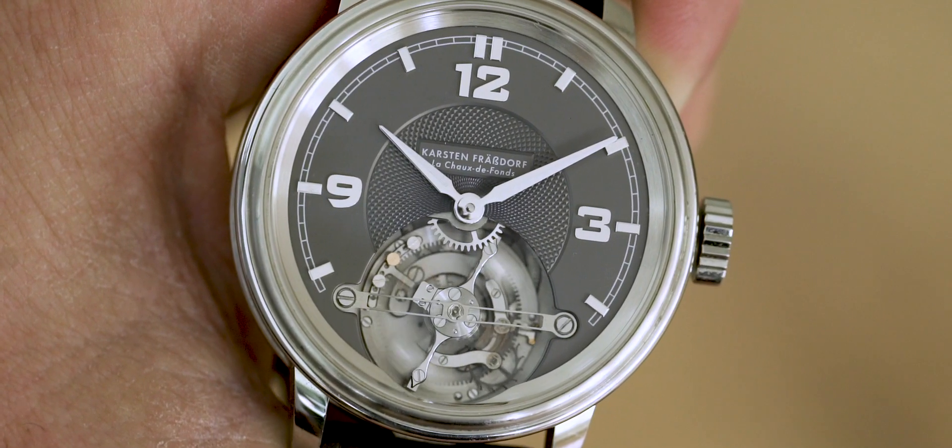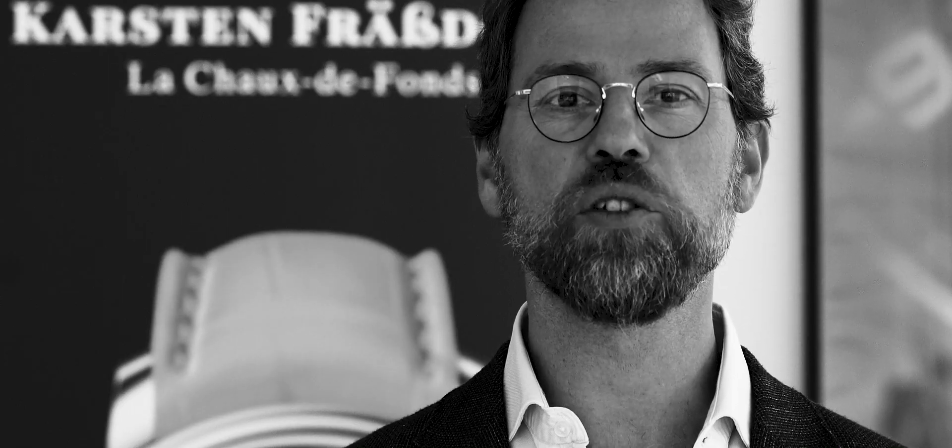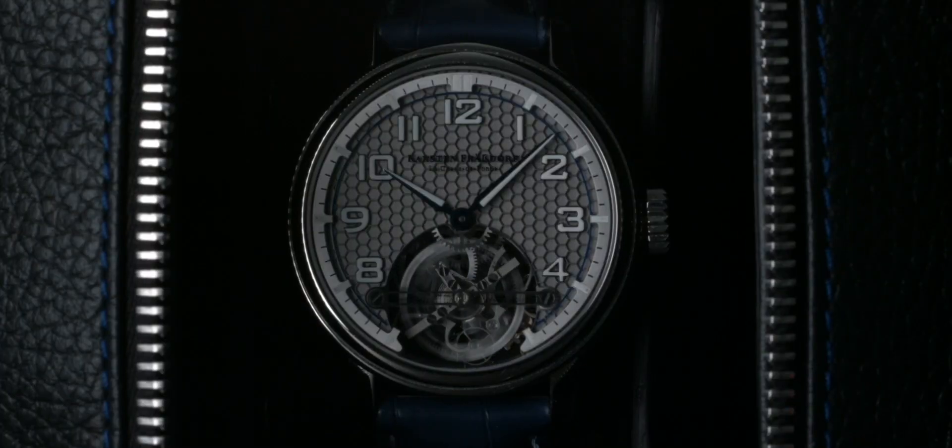Two years ago, Carsten Vreesdorf launched Montre KF and his first watch under his name, the Spyrograph. This year he introduces his second watch, the Spyrograph Sport. Like the Spyrograph, it's a tourbillon wristwatch that you can wear as a daily beater.